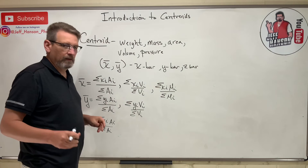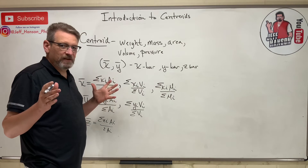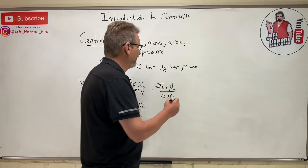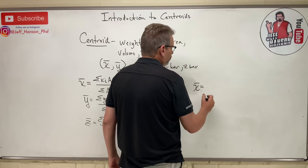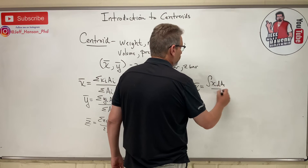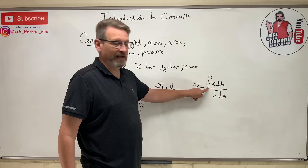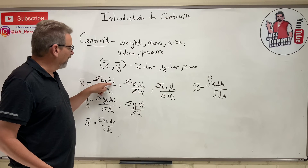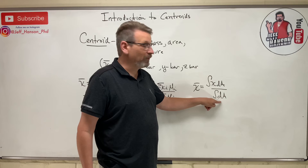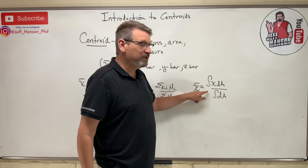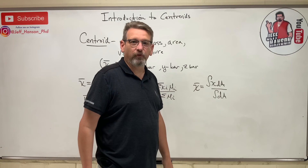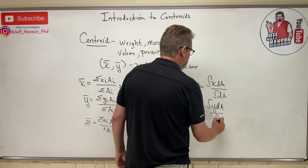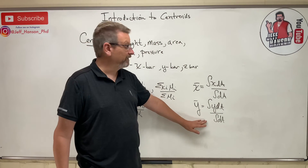Those equations in the back of the book can also be derived. This is the first chapter in statics where we use the 'C' word — calculus. The integral form is: x-bar equals the integral of x dA over the integral of dA. In calculus, integral just means sum — it's the same as the summation equation, but using infinitesimally small elements for shapes not in the table.